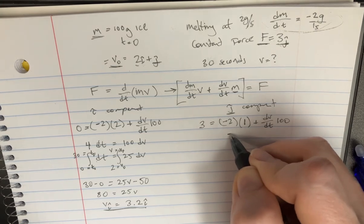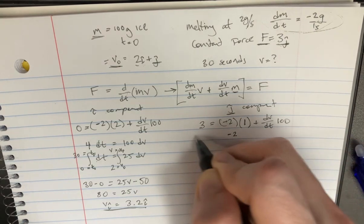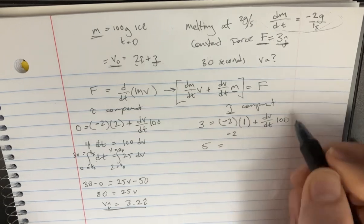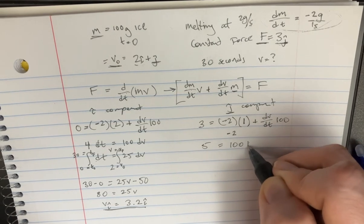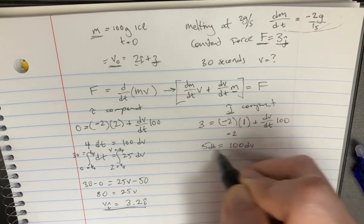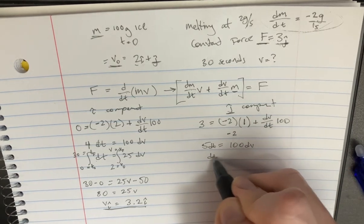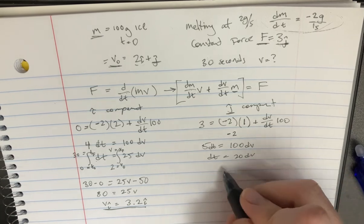So that's going to be the same there. Here we're going to get negative 2. We can move that to the other side. So we can say 5 is equal to 100 dv. I'll move the dt over here as well. And then that's just going to be dt is equal to 20 dv on that side.